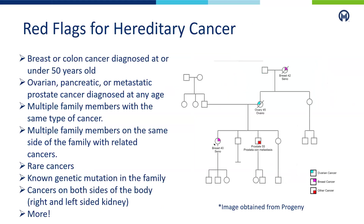What might be some examples of red flags that could indicate a hereditary cancer in the family? This is a tool called a pedigree that we use to examine family history of cancer, with circles representing females and squares representing males. One thing we would take note of is a younger age of diagnosis than is typically expected — for instance, breast or colon cancer under 50 years of age. Other red flags include ovarian, pancreatic, or metastatic prostate cancers diagnosed at any age.